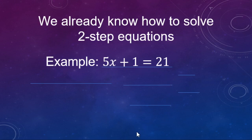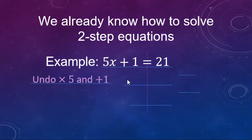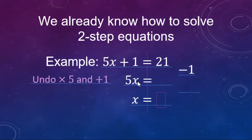With these, we want to get the x by itself — we want to isolate the x. We are going to undo the times by 5 and the plus 1 that's being done to the x. For undoing the plus 1, we are going to do a minus 1 to both sides. We already know that 5x plus 1 minus 1 is going to make just 5x.